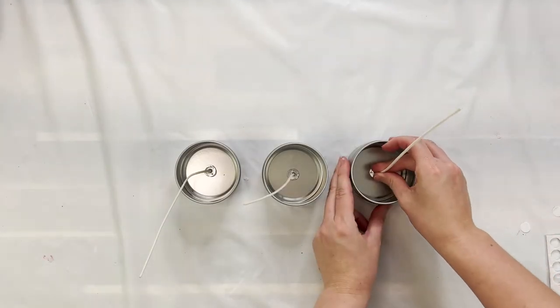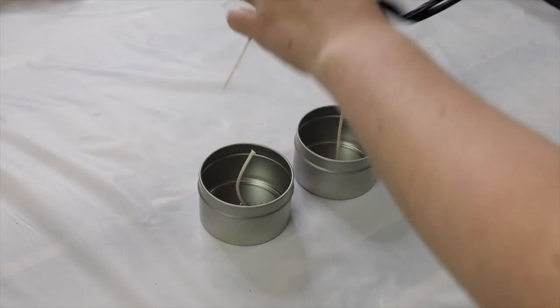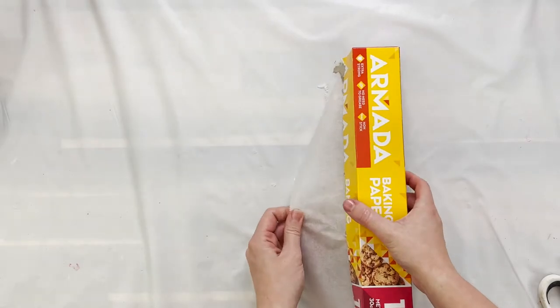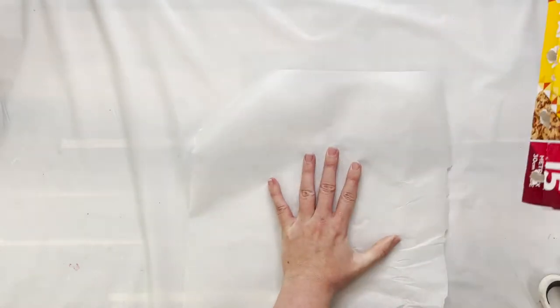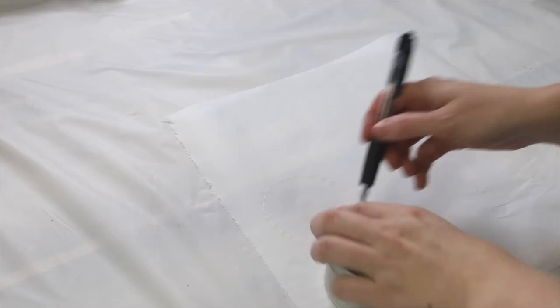I'm just adding my wicks in so that way I can get ready to add my messages. Because these are really small tins, the wicks are a bit in the way, so I'm just giving them a trim so that way they don't annoy me when I'm trying to add in the different messages.